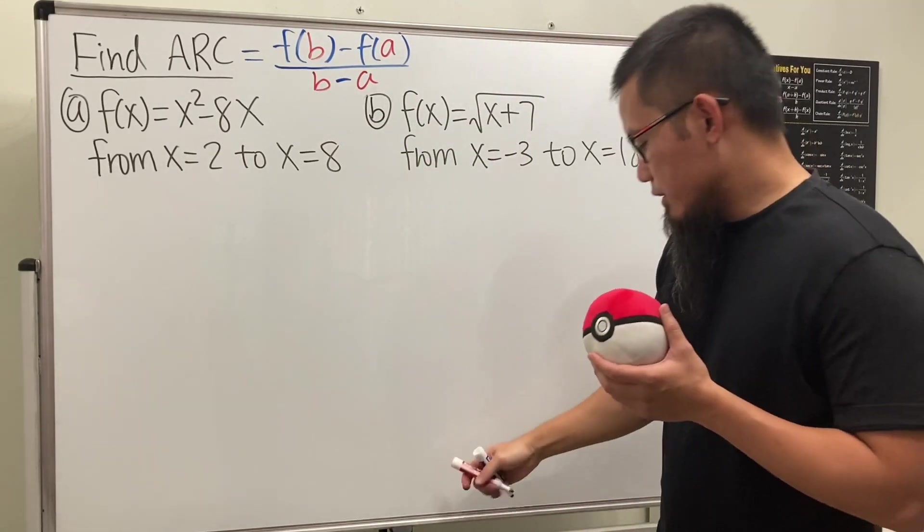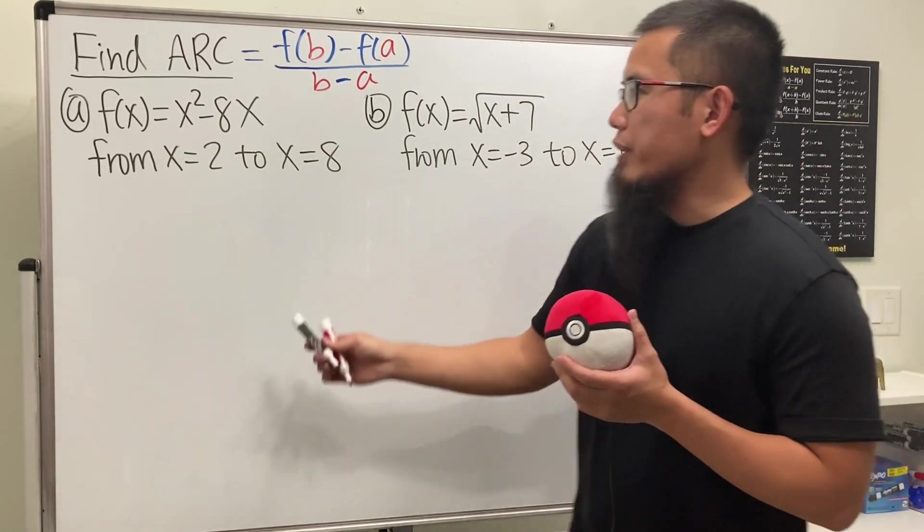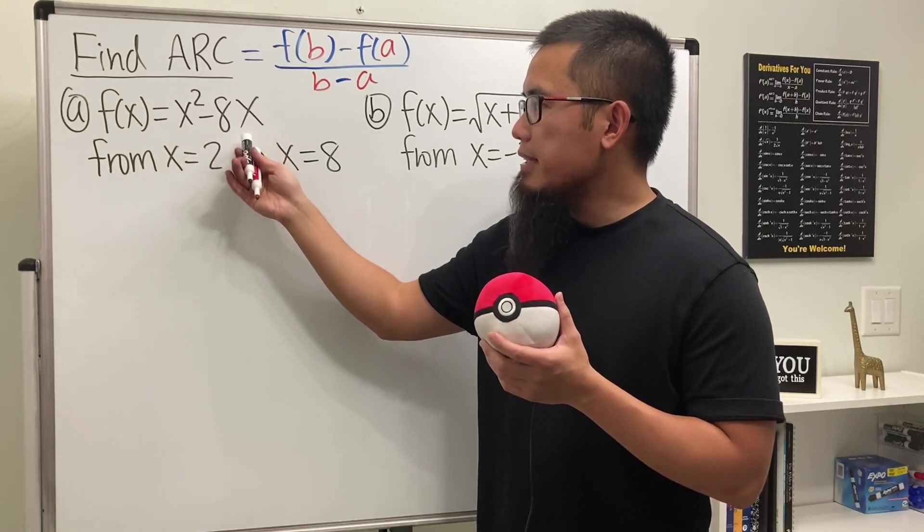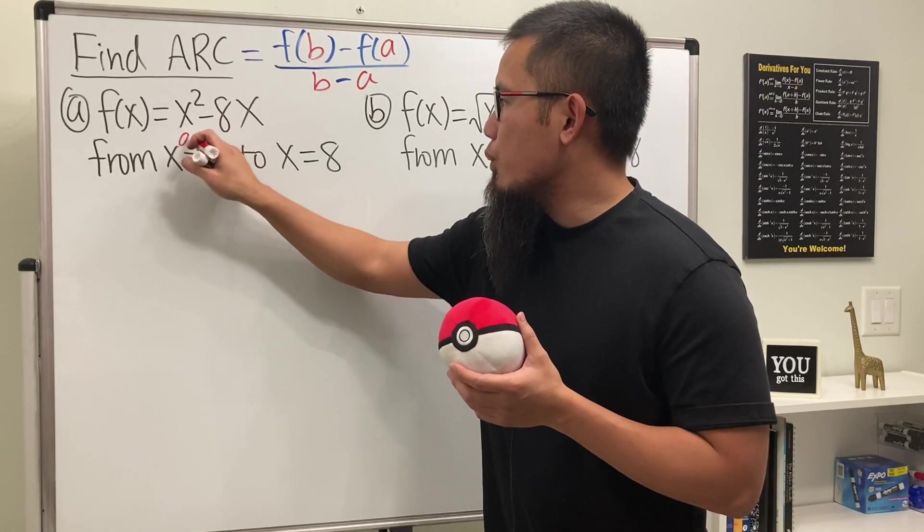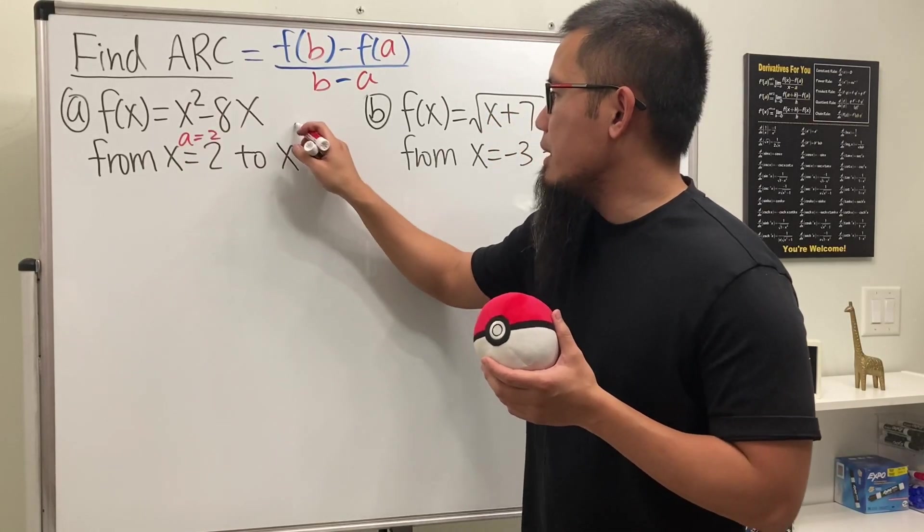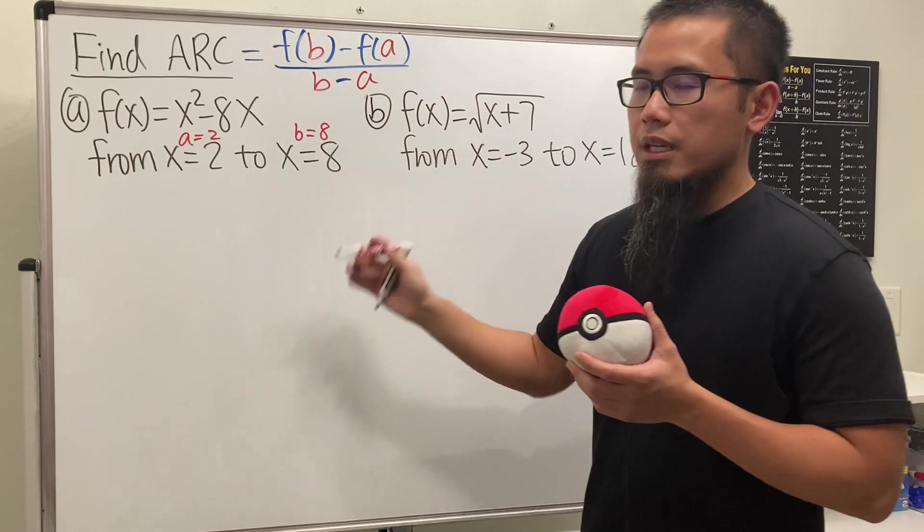If you look at what we have right here, the function is x squared minus 8x and we go from 2 to 8. So this means a is equal to 2 and then b is equal to 8.